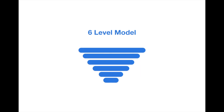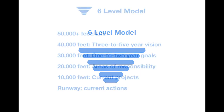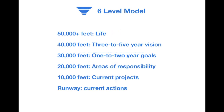So what is the six level model? Think of the six level model as a runway, taking you from current actions all the way to the life that you want to have. We go from runway, which is your current actions, to 10,000 feet — your current projects — 20,000 feet — your areas of responsibility — 30,000 feet — one to two year goals — 40,000 feet — three to five year vision — and finally 50,000 feet, the big picture: your entire life.